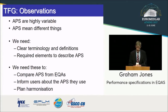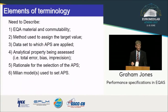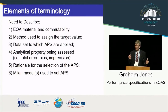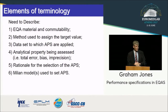We need this terminology and these definitions in order to compare performance specifications from different EQA providers. If you fail in one and pass in another, unless you know why they've been set and have terminology to understand the rationale, you don't know why you've passed or failed. We came up with six elements of terminology to allow a user to truly understand a performance specification: the nature of the material and its commutability, how the target value was assigned, what data it's applied to, what measurement property is being assessed, why it was selected, and which Milan model was used.